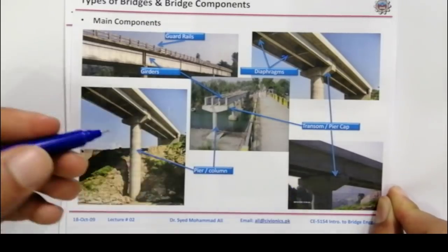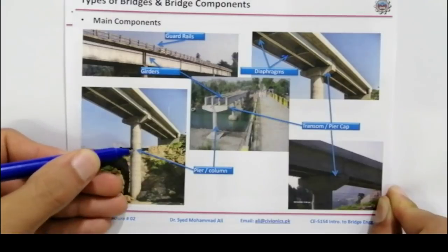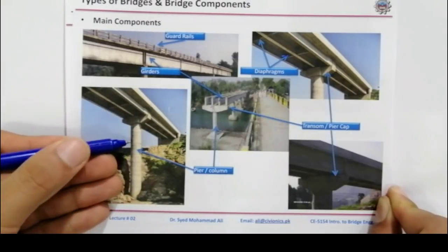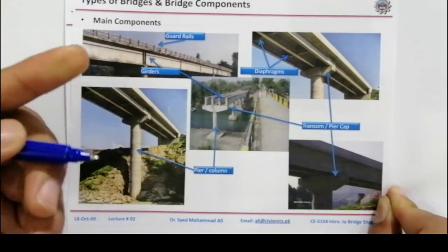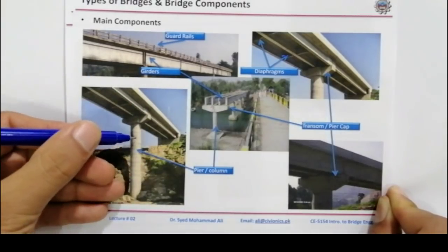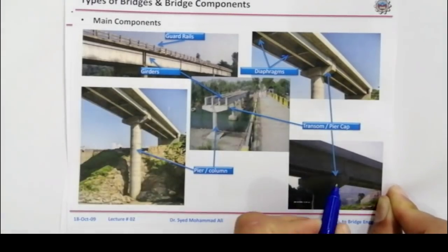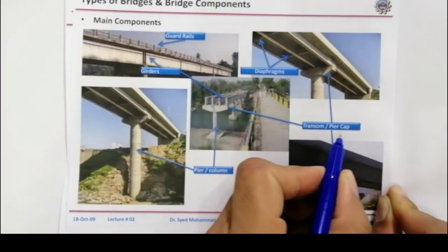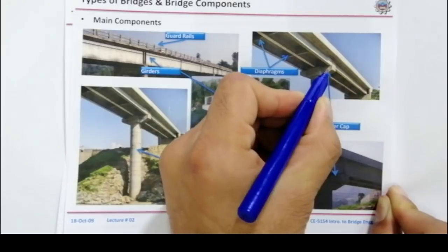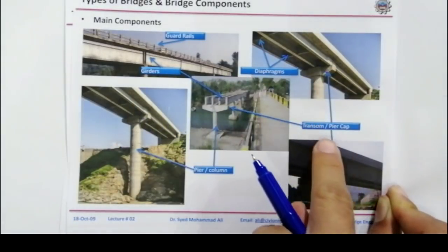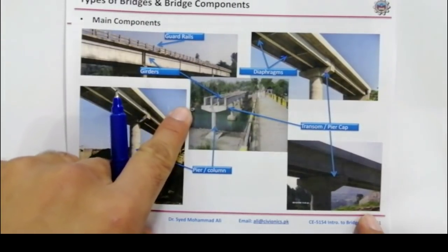What is a pier? First of all, I will discuss the pier. In building terminology we call it a column, but specifically in bridge engineering it is called a pier. Now, what is a pier cap? You can see this is called a pier cap — also referred to as a transom. You can clear your concept about this component.